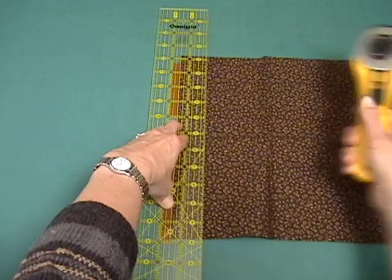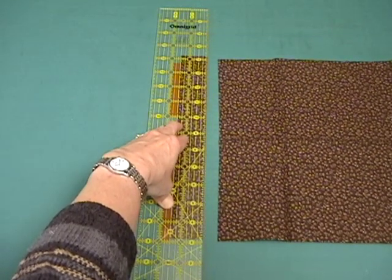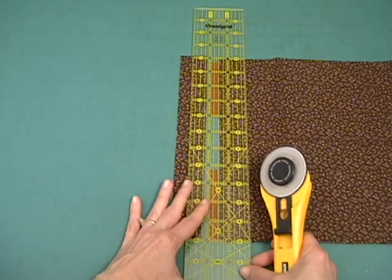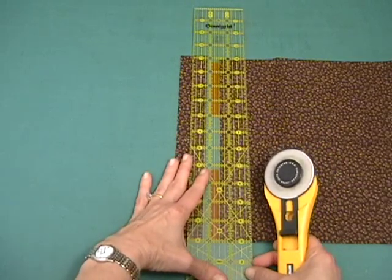And before I take my hand off of my ruler I will pull the fabric away making sure that I got a good cut and then I can slide my ruler over and my cutting edge catches up against it and I'm ready to make the next cut.